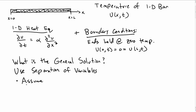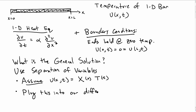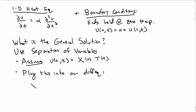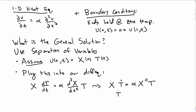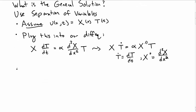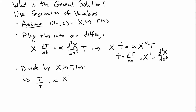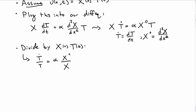Step one: assume that u(x, t) can be written as X(x) times T(t) — that's our separation ansatz. Plugging this into the differential equation, on the left-hand side we get X times T-dot, equal to alpha times X-double-prime times T, using dots for time derivatives and primes for space derivatives. Dividing by X times T gives us T-dot over T equals alpha times X-double-prime over X.